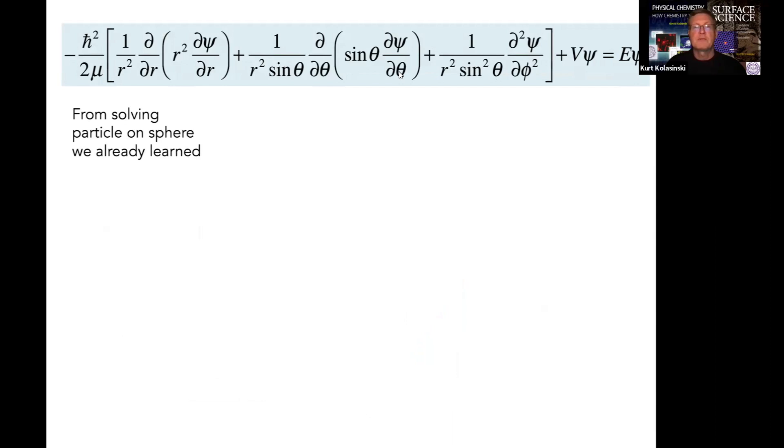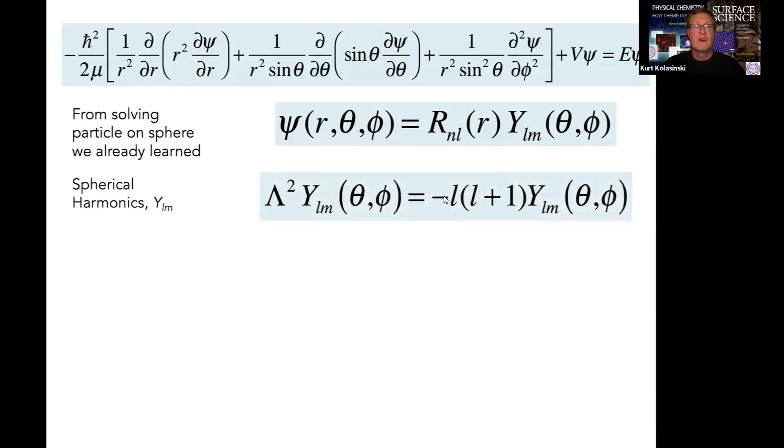We're going to set up the problem the same way we did for the particle on a sphere problem and use what we learned from there. Our wave function, which is some function of r, theta, and phi, we're going to solve in terms of variable separation—one radial term and one angular term.